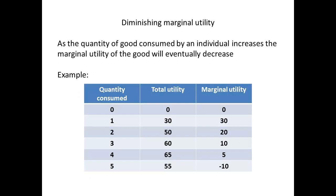An important idea for cardinalists is that of diminishing marginal utility. This can be illustrated by the chart showing marginal utility relating to quantity consumed. At first the marginal utility is high, but then it falls and may even go to a negative value. So after an initial increase in quantity, the more of a good that is consumed, the less likely the consumer is to want further units of the good. This is known as diminishing marginal utility.